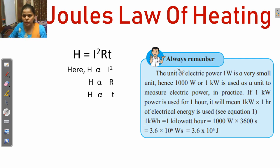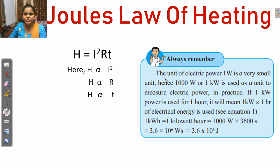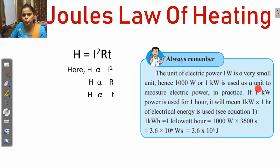This box is from your textbook — always remember it. The unit of electric power, 1 Watt, is a very small unit. Hence, 1000 Watt or 1 Kilowatt (kW) is used as a unit to measure electric power.